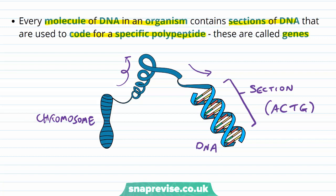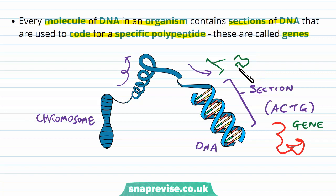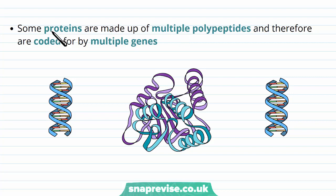A different gene, which would be a different section of bases, would code for a different polypeptide. Overall, DNA is just made up of lots of genes making different polypeptides, which then form different proteins. Some proteins come in lots of different shapes and sizes. Some proteins are made up of multiple polypeptides that come together to form a general overall structure. Therefore, because they have several polypeptides in them, and because one gene codes for one polypeptide, they're coded for by different genes — multiple genes.